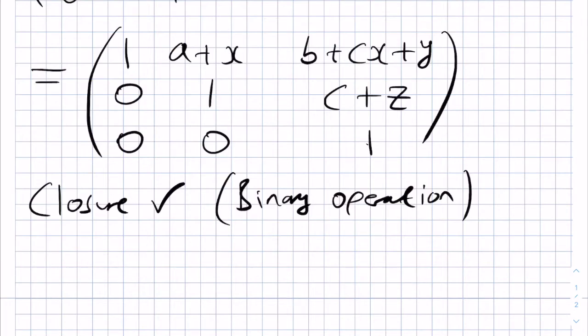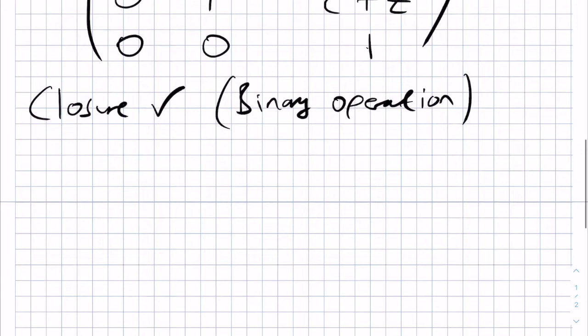Next, we need to check associativity of the operation. But, matrix multiplication is associative in general. And so, it is associative when applied to this set of matrices in particular.